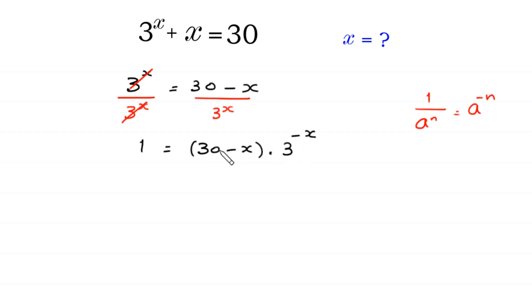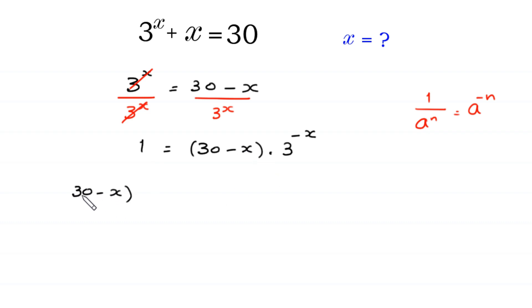Now we write this as: 30 minus x times 3 to the power negative x is equal to 1.